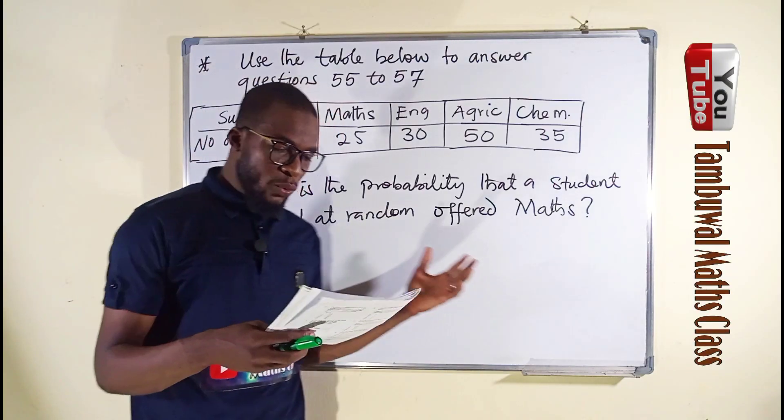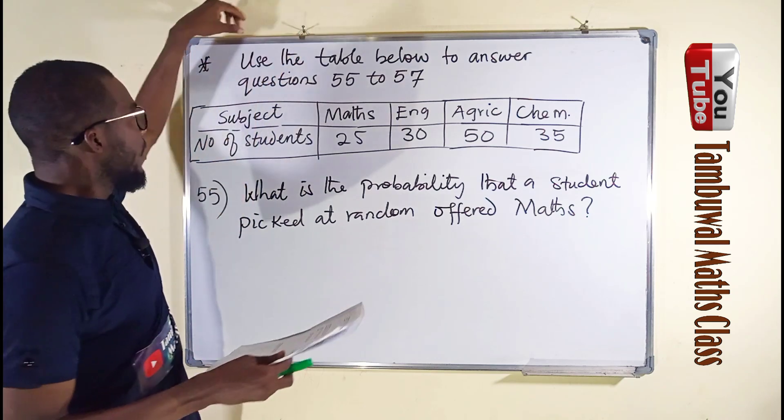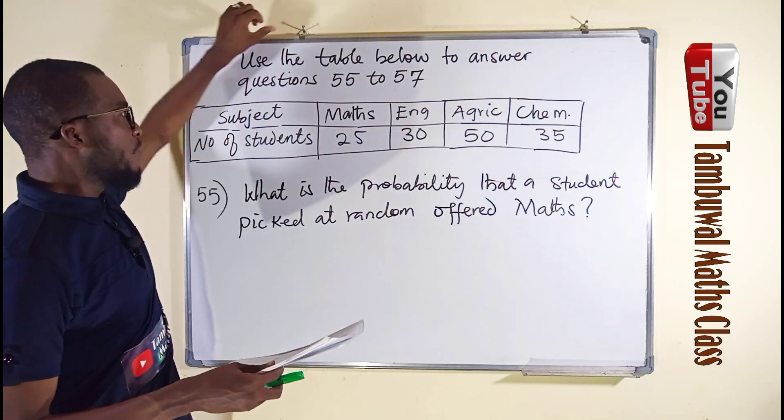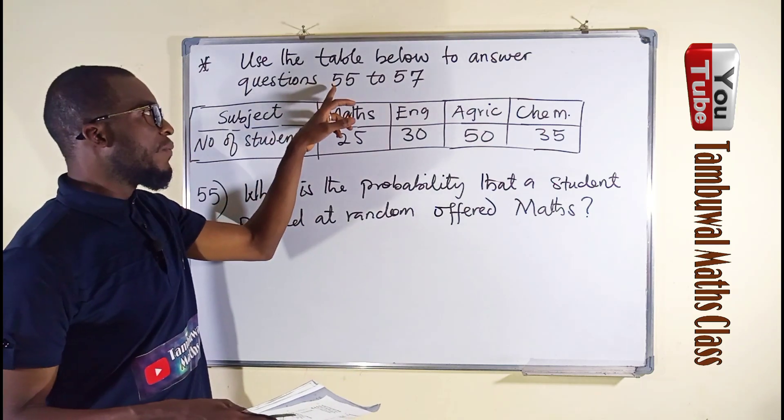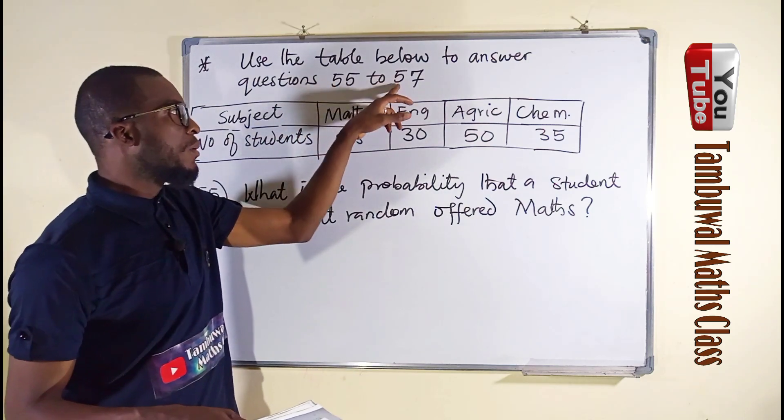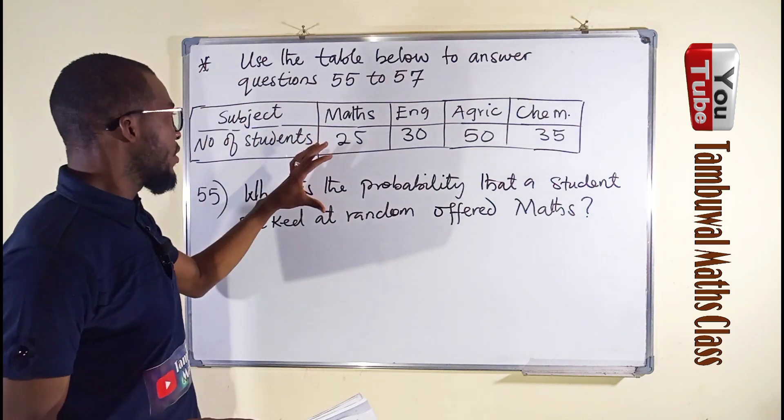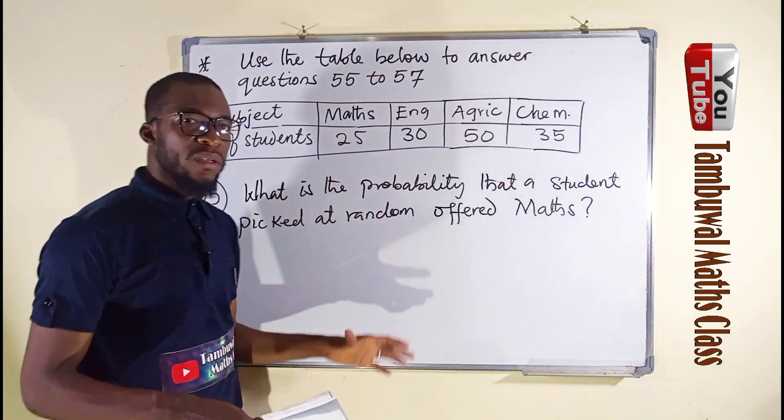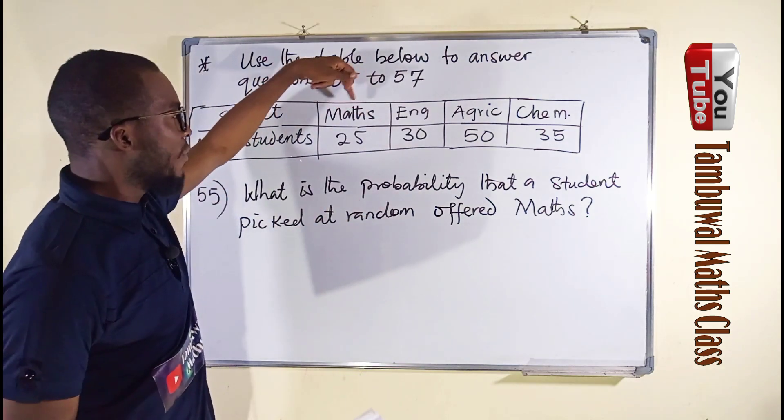Before question number 55, we have information that says to use the table below to answer questions 55 to 57. The table showcases the number of students that offered some subjects.